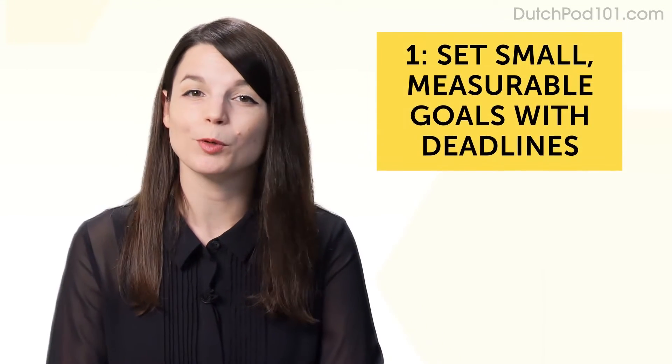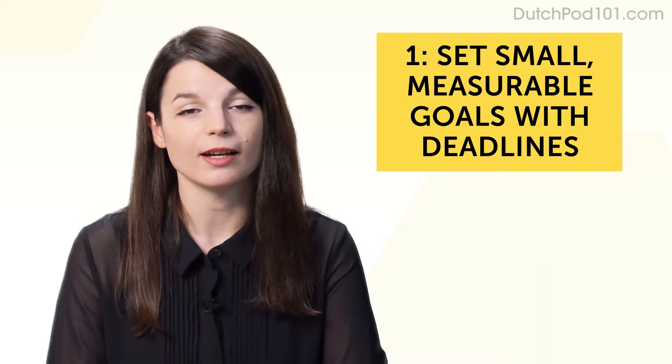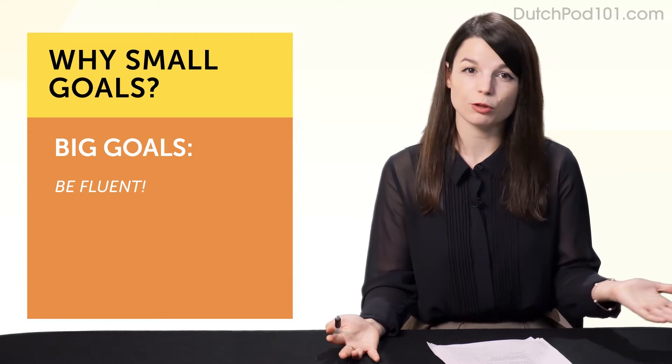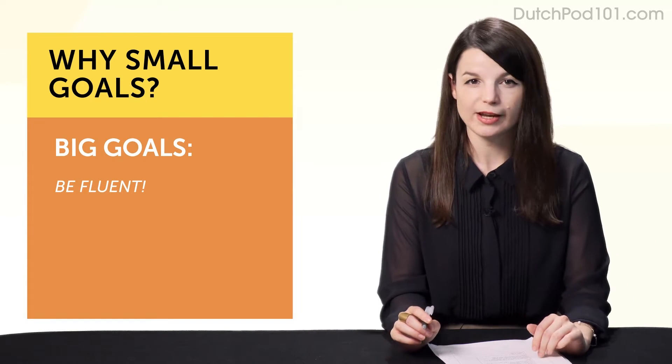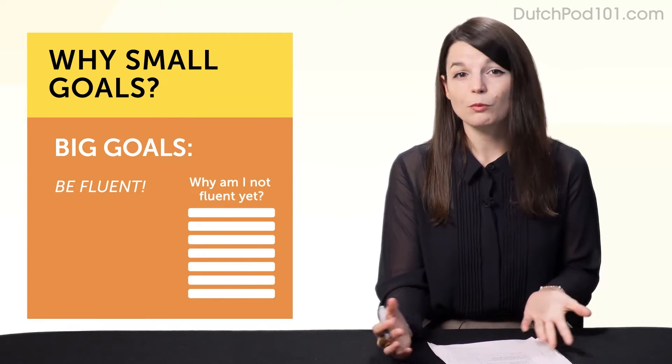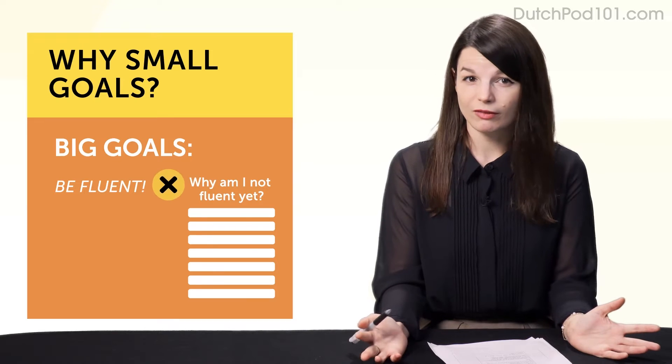Let's start with the first and most important one. Habit number one, set small, measurable goals with deadlines. Why small goals? Well, say for example, you set big, vague goals like, I want to be fluent someday. And maybe you buy a textbook. You read the first chapter. Then you start wondering if you're getting any better. You start worrying you'll never be fluent. And you give up.